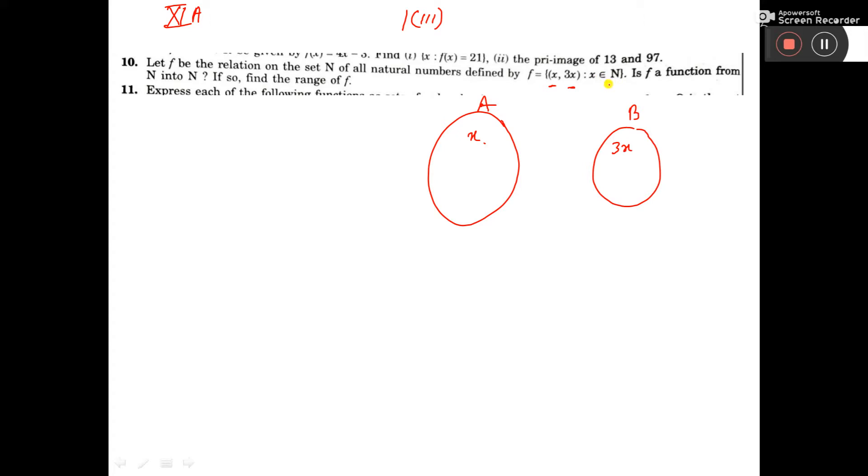This is N to N. Natural numbers start from 1, so it will be 3. If I consider X equal to 2, then 3 times 2 is 6. If I consider 3, then 3 times 3 is 9.